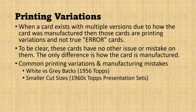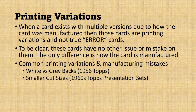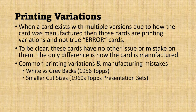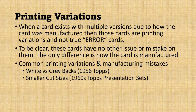Smaller cut sizes: in the 1960 Topps there were presentation sets, and all those cards were cut smaller. From what I understand, they were printed differently at a different time and were designed to get out early so they could sell cards to retailers. They made these presentation sets using a different process, so they were cut smaller. They're not anything different — there are no errors — they're just a different size.